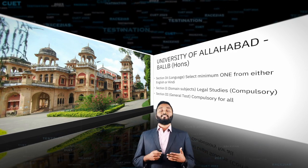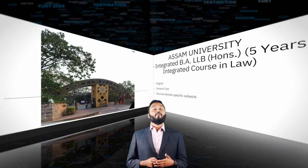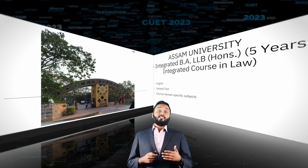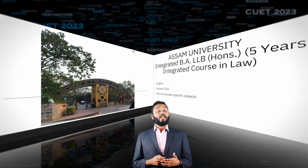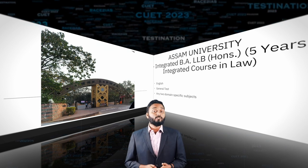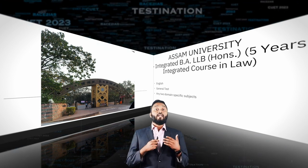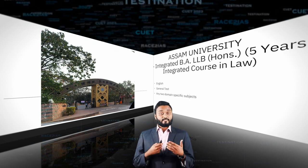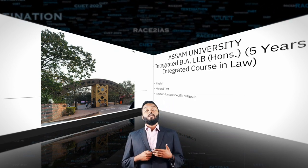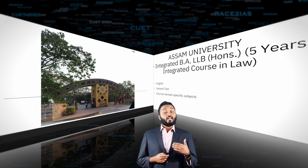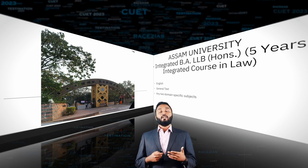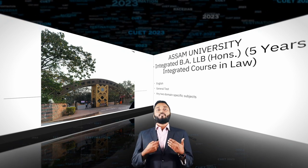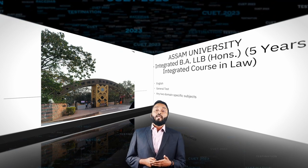The second university is Assam University, which is again a central university. It provides an integrated BA LLB Honors — a five-year integrated course. To appear for this program, you have to clear English, the General Test, and any two specific domain subjects. You can refer to the list of those specific subjects separately.